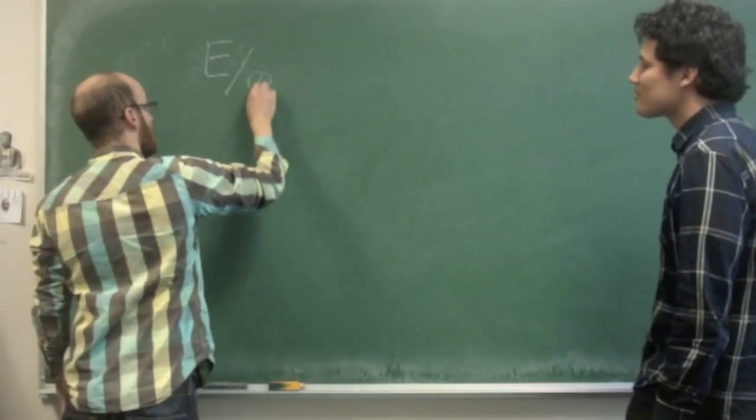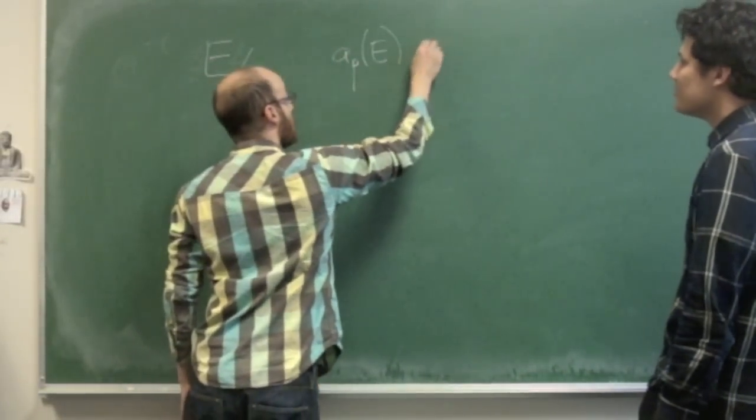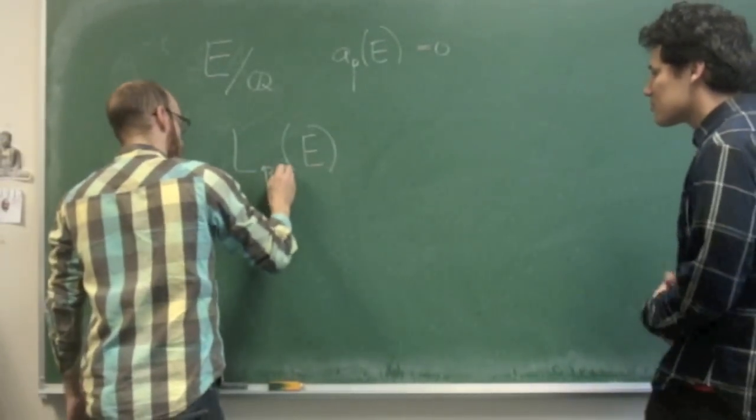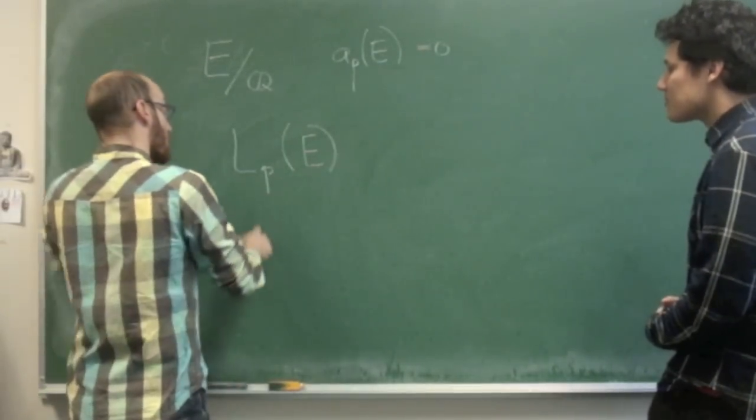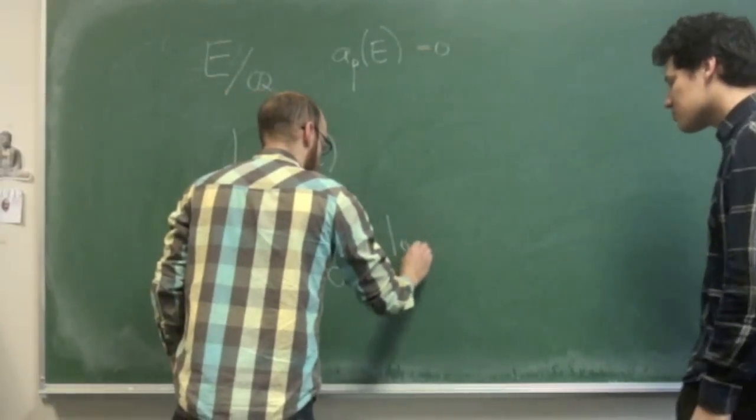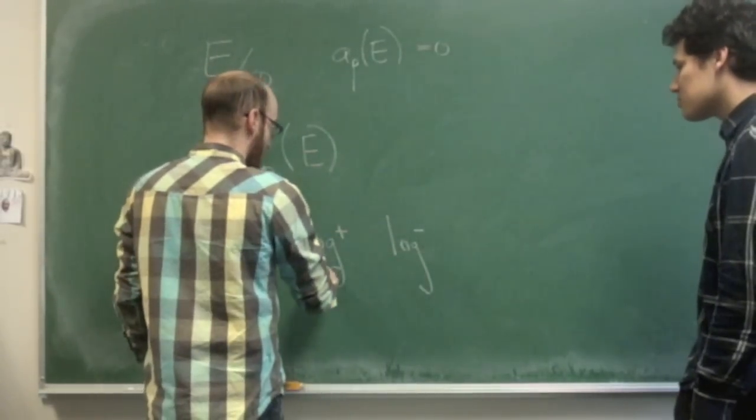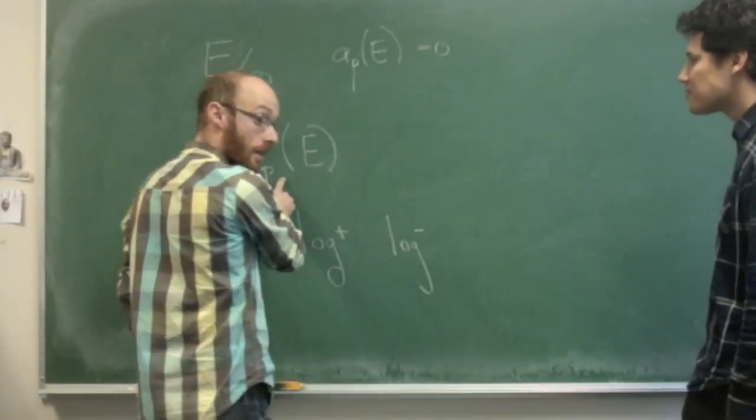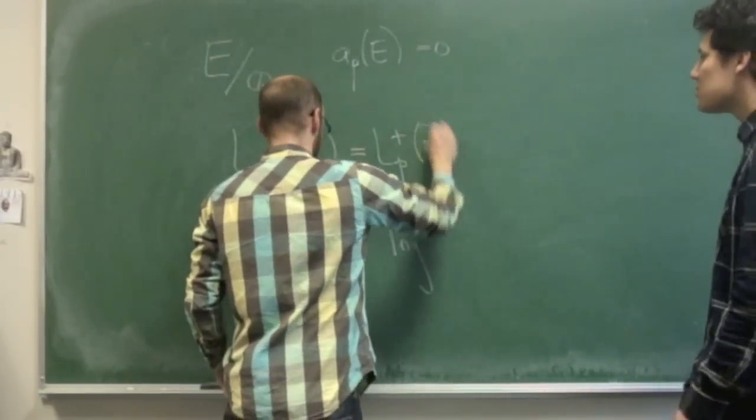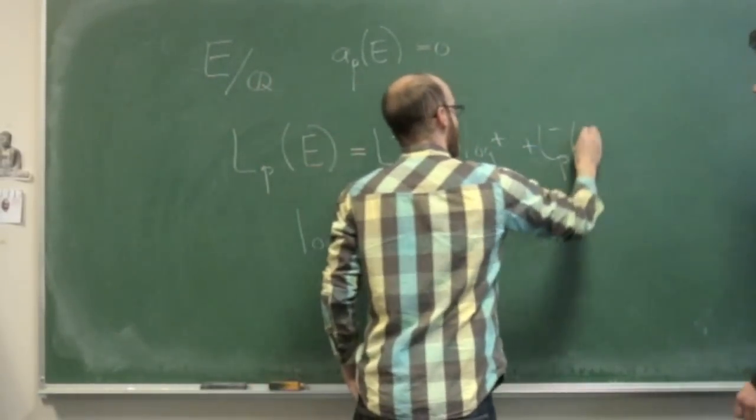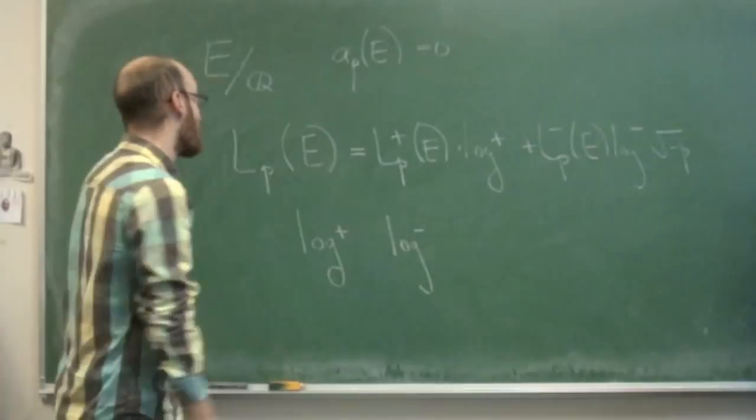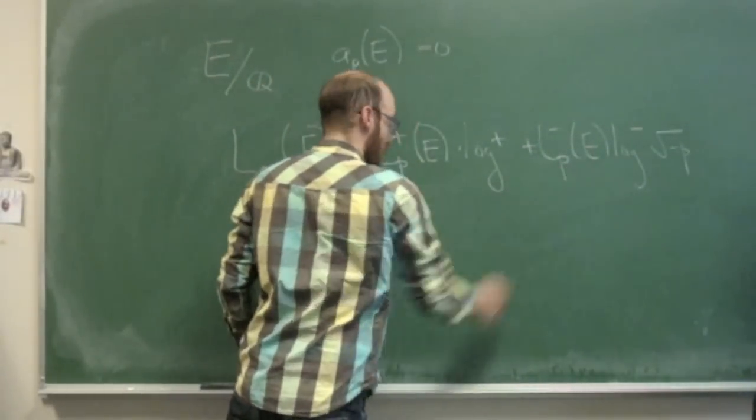So, let me take an elliptic curve over Q and a prime p so that the p-th Fourier coefficient of the curve is zero. And attached to this, you can make a p-adic L function of the elliptic curve, which is some unbounded function in the open unit disk. The main theorem that I proved is, in fact, there are two functions, log plus and log minus, which are also unbounded functions in the open unit disk. These depend only upon the prime p and not the elliptic curve. And this p-adic L function can be written as a linear combination of these two functions, with coefficients which are bounded functions.